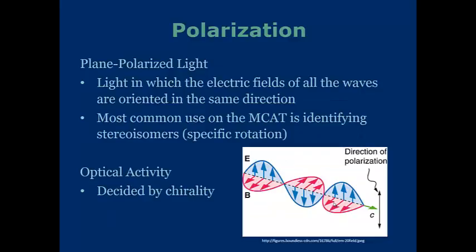The last thing we're going to go into in our lecture today is polarization. Plain polarized light is light in which the electric fields of all the waves are oriented in the same direction. The most common use you're going to see on the MCAT is when you're dealing with stereoisomers, or specific rotation. This is a way in which you calculate and determine optical activity, which is decided by the chirality of the molecule in question.